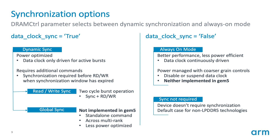From a GEM5 perspective we have modeled this, but not all features — the global sync concept, a standalone command that allows synchronization across multiple ranks, has not been modeled. When data_clock_sync is false, this mimics an always-on mode for better performance and easier scheduling but is less power efficient, as the data clock is continually driven and no synchronization commands are needed dynamically. This false case is also the default for non-LPDDR5 technologies, indicating synchronization is not required.